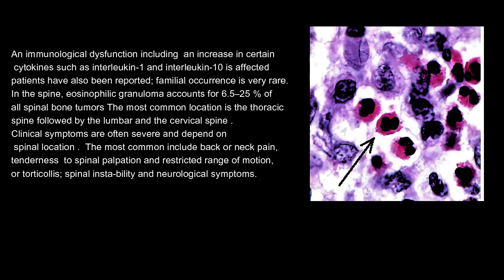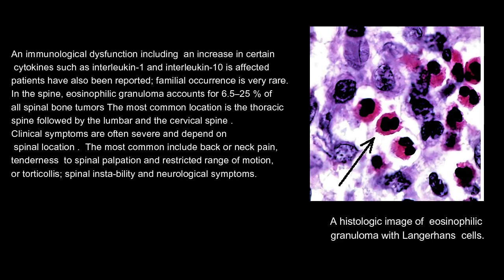An immunological dysfunction including an increase in certain cytokines such as interleukin-1 and interleukin-10 in affected patients has also been reported. Familial occurrence is very rare. In the spine, eosinophilic granuloma accounts for 6.5 to 25 percent of all spinal bone tumors. The most common location is the thoracic spine, followed by the lumbar and the cervical spine.